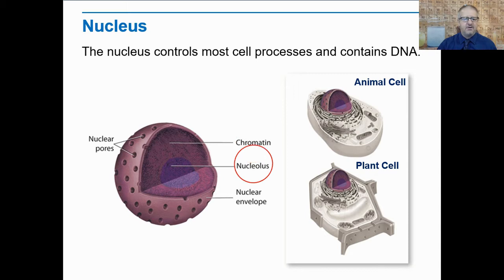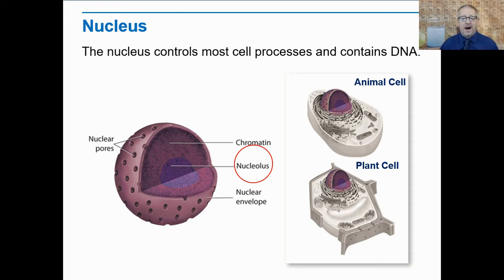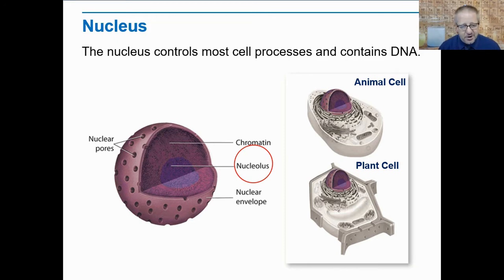Inside of the nuclear envelope, we have the nucleolus. This is a specific area within the nucleus where ribosome assembly initiates. So ribosomes — which we're going to learn about shortly — are made in the nucleolus.